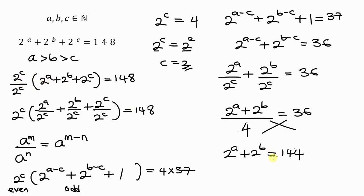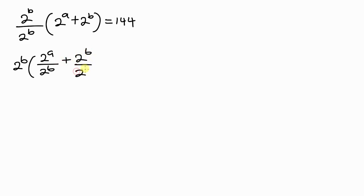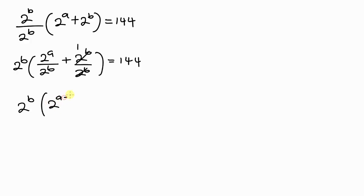We repeat the same process. The lowest value is 2^b, so we multiply and divide the left-hand side by 2^b. This gives 2^b × (2^(a−b) + 1) = 144, applying the power law of indices.